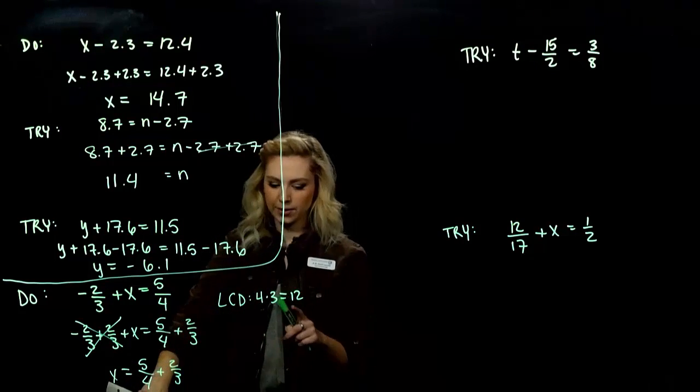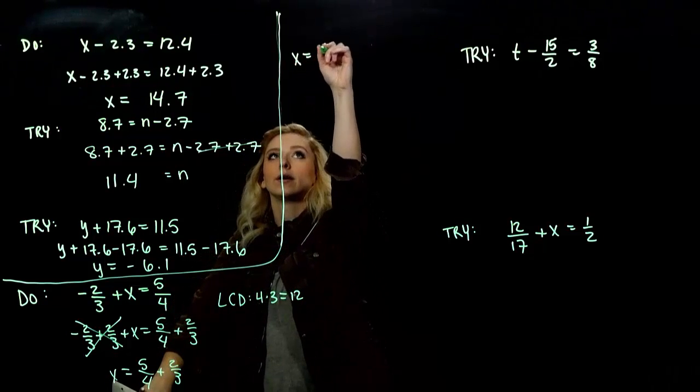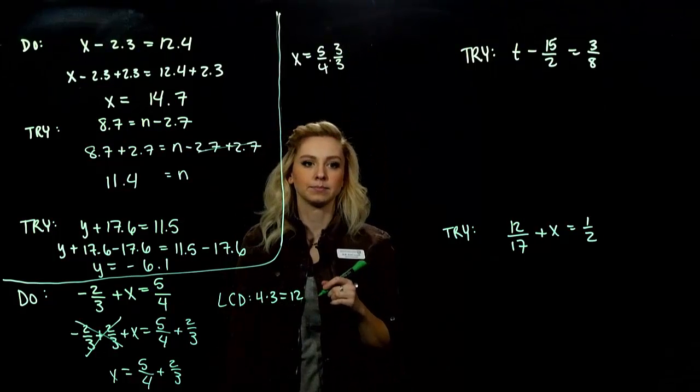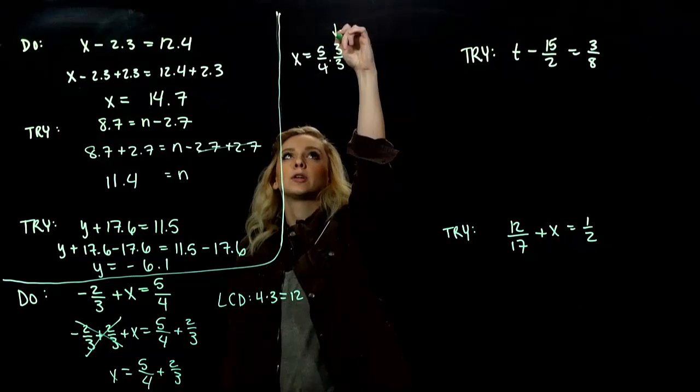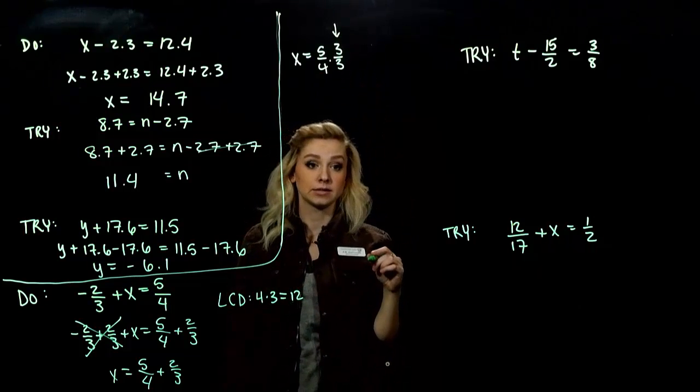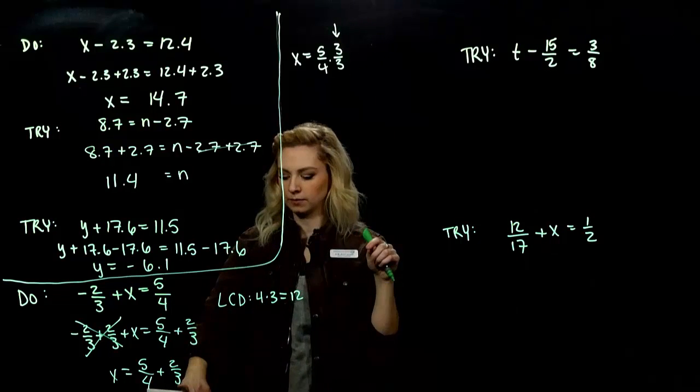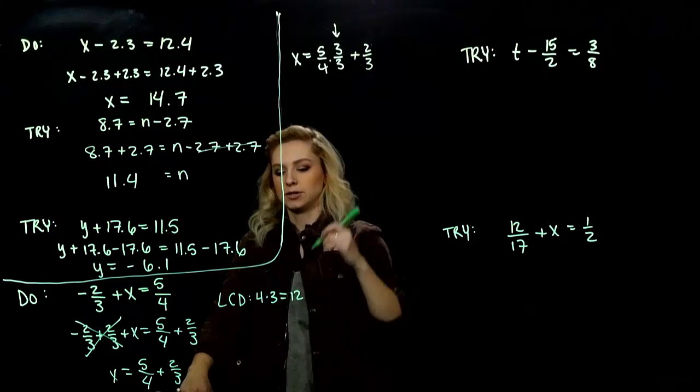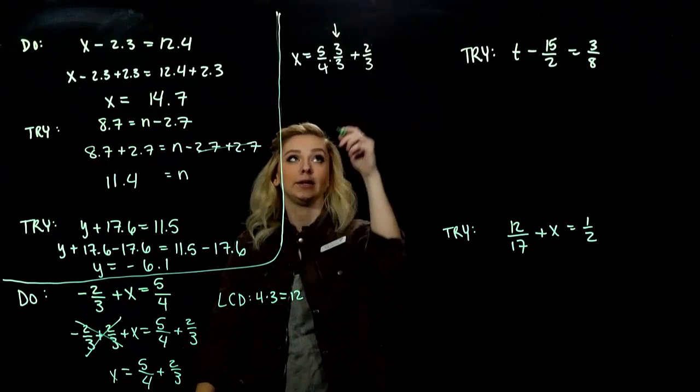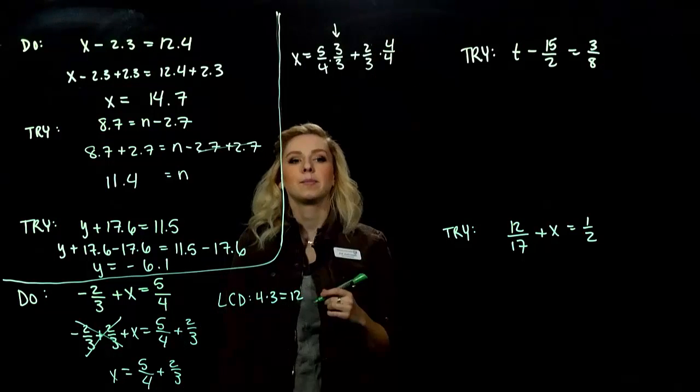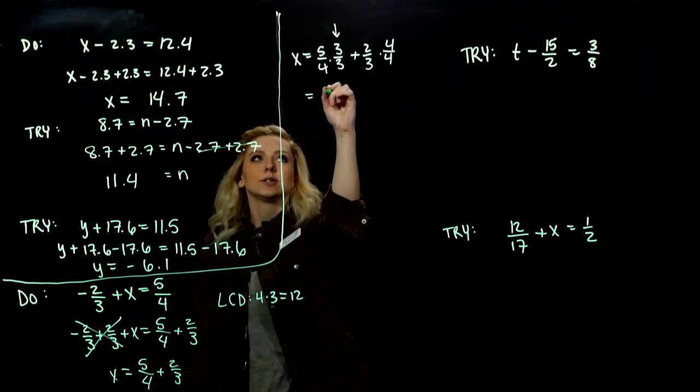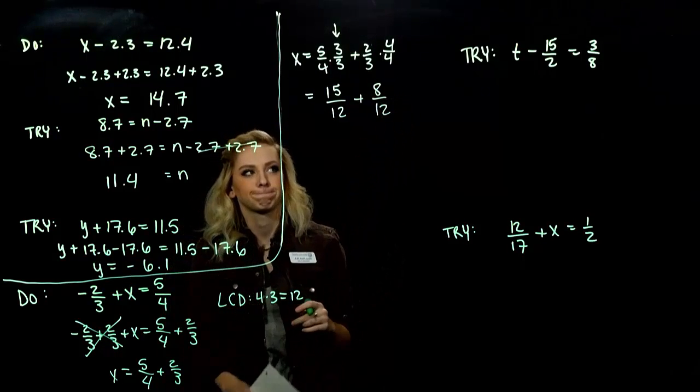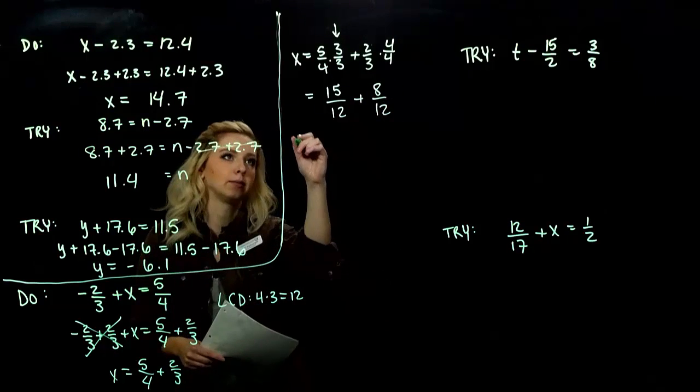So, to turn 4 into 12, what do we have to multiply by over here? A factor of 3, whatever we do to the bottom, we have to do to the top. Because, in reality, what are we multiplying by right there? Same thing divided by the same thing, 1. What am I missing in this denominator? I have a factor of 3. To turn 3 into 12, I need a factor of 4. Whatever I do to the bottom, I have to do to the top. So, we're looking at 15 twelfths plus 8 twelfths. So, now that we have those common denominators, we can add them together.